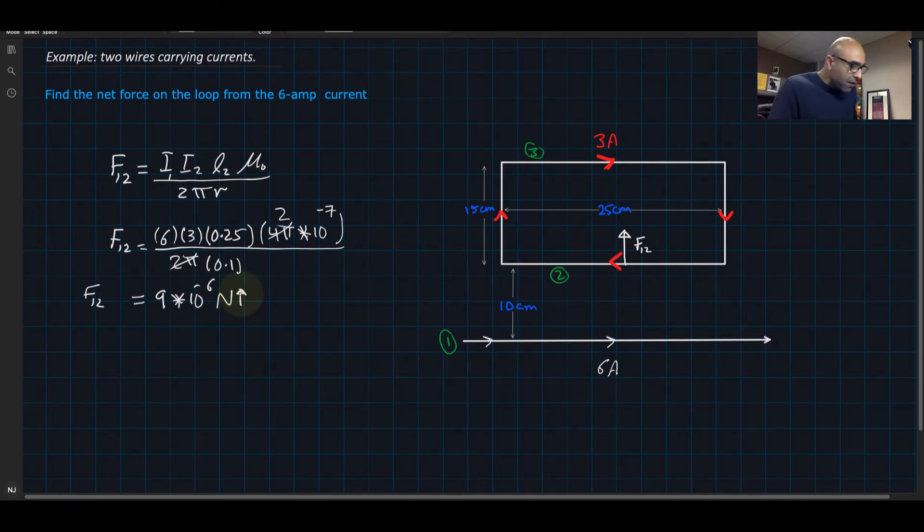Now we can find F1 on 3. F1 on 3 equals I1 I3, which is the same as I2, and L3 is the same as L2, so I'm not going to change that, mu naught divided by 2 pi r. I'm going to call this R1, and now we need to call the other one R2 because we have two different distances.